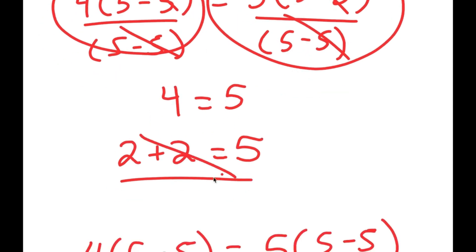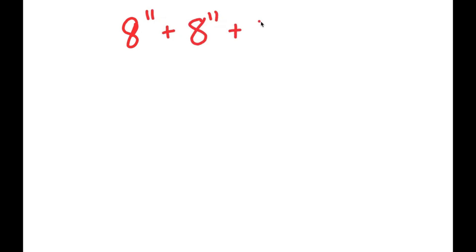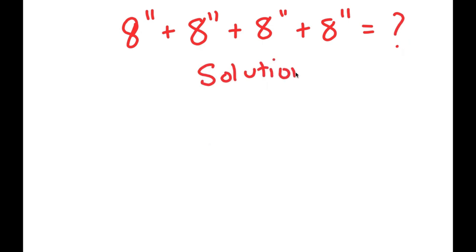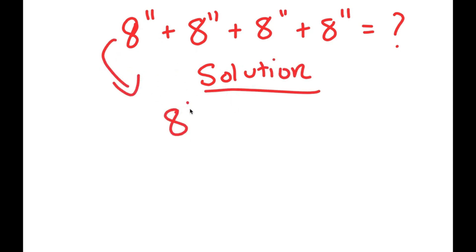So this means that 2 plus 2 is not equal to 5. Now for the next problem: I have 8 to the power of 11 plus 8 to the power of 11 plus 8 to the power of 11 plus 8 to the power of 11, and I'm going to find the value of this. I'll rewrite my problem: 8 to the power of 11 plus 8 to the power of 11 plus 8 to the power of 11 plus 8 to the power of 11.